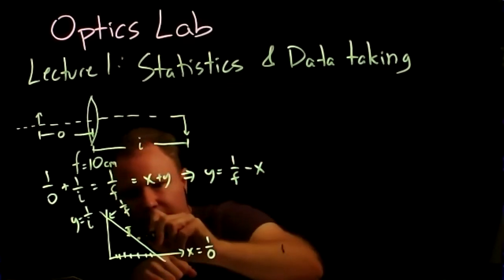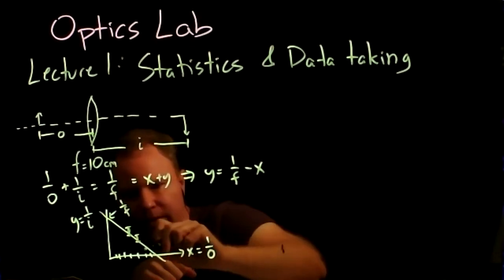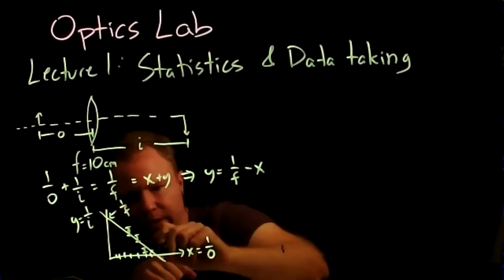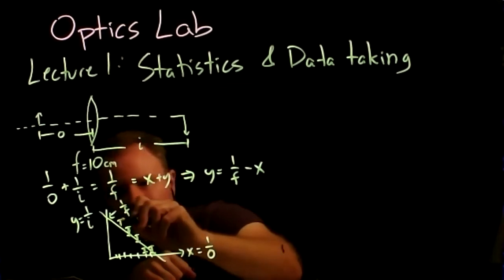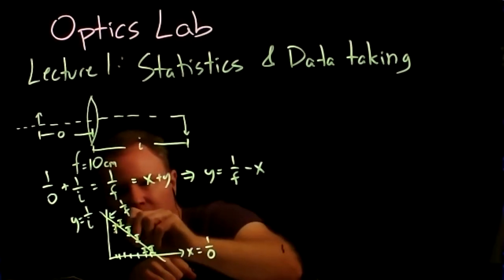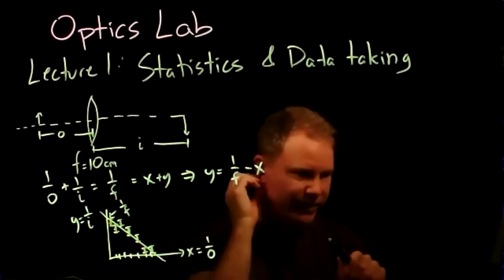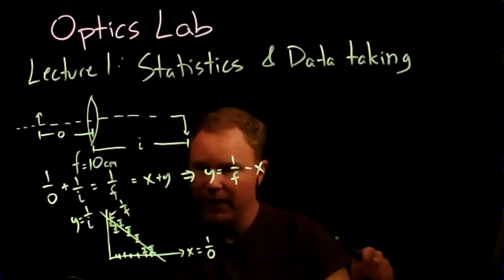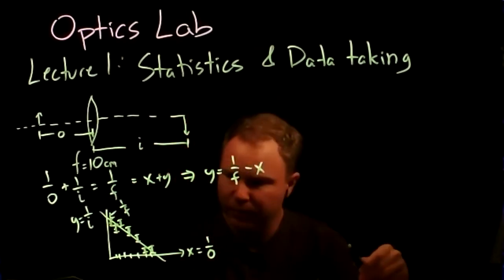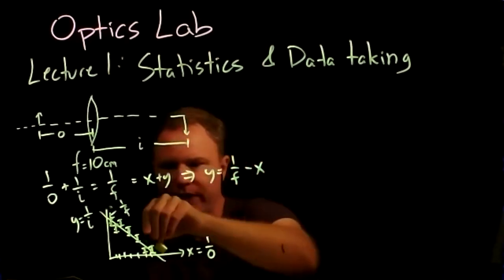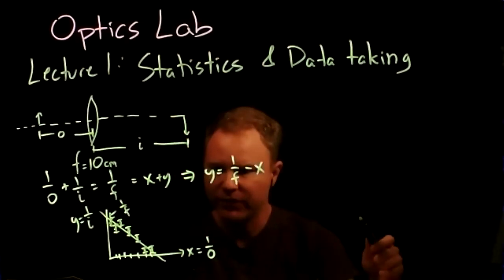Let me draw some data with some uncertainty. There's a point right on the line, some points quite above the line, and one below. Sometimes the error bars hit the line, sometimes they don't. You get seven data points, each with its uncertainty, and then you want to fit a line and get the best fit line.